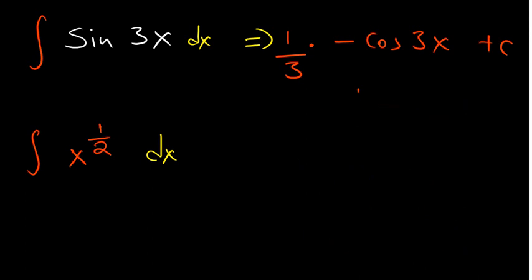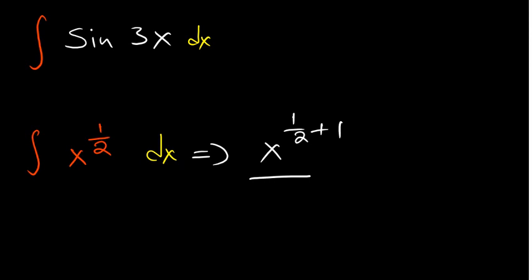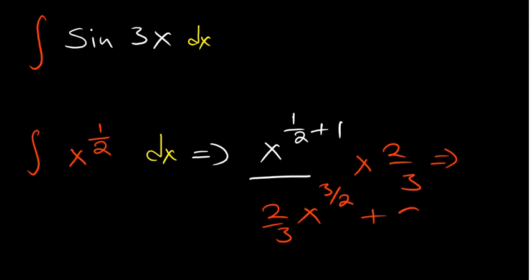Feel free to pause and try the last example yourself. For x to the power of 1/2, add 1 to the power to get 3/2. Dividing by 3/2 is the same as multiplying by 2/3. So the integral gives 2/3 · x^(3/2) + C.